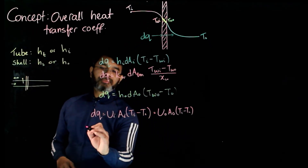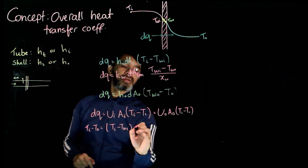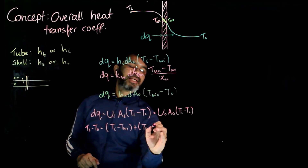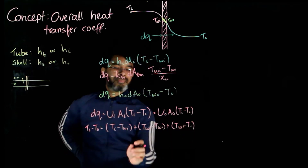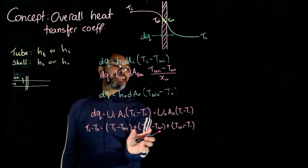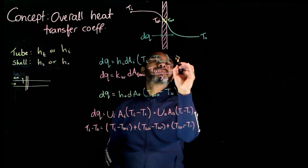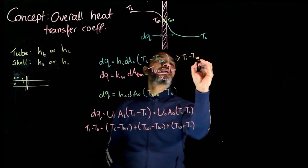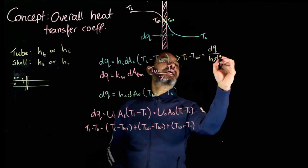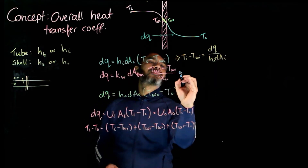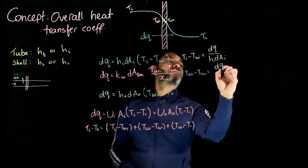We can write T_I minus T_O as: (T_I minus T_WI) plus (T_WI minus T_WO) plus (T_WO minus T_O). We are simply adding and subtracting the same terms so it remains T_I minus T_O. From the first expression we get: T_I minus T_WI equals dQ over (H_I times dA_I). From the second we get T_WI minus T_WO.